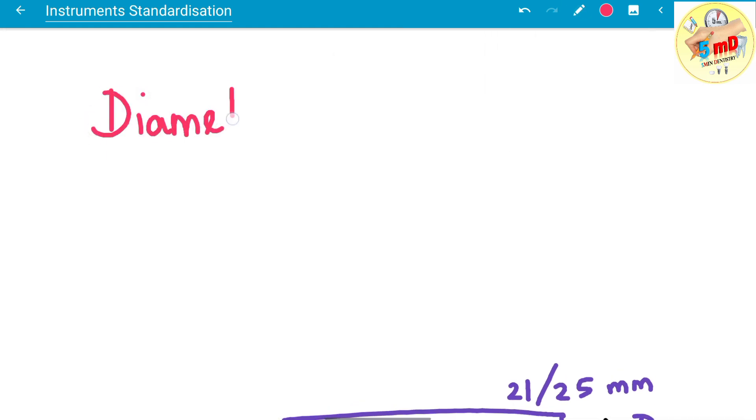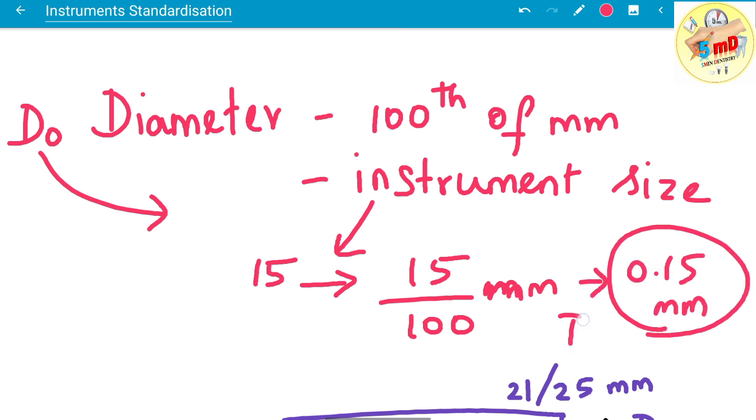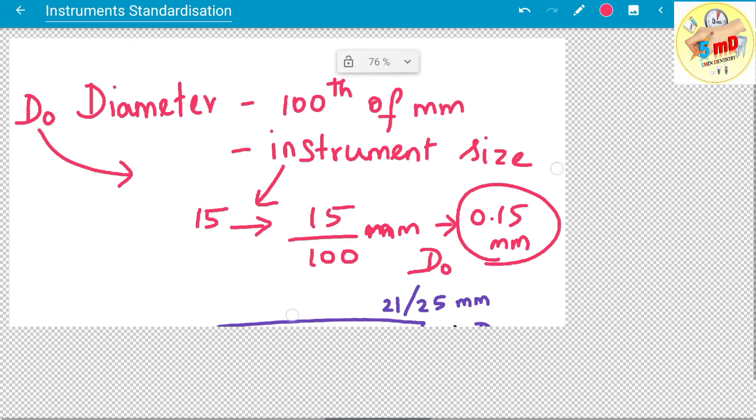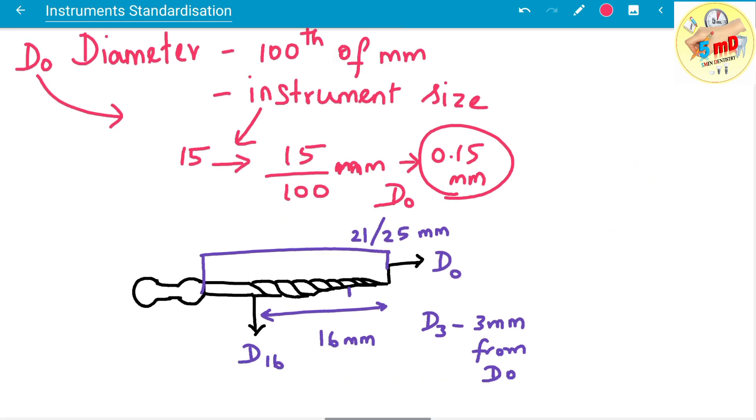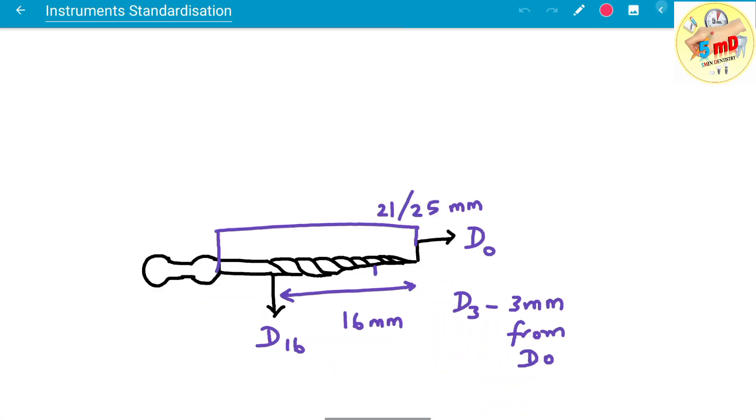The diameter at d0 is usually expressed in hundredth of mm of the instrument size. That is, if the instrument size is 15, then the d0 will be 15 by 100, which is 0.15 mm. For example, if it is 20, you have 0.2 mm at the tip of the instrument as diameter.